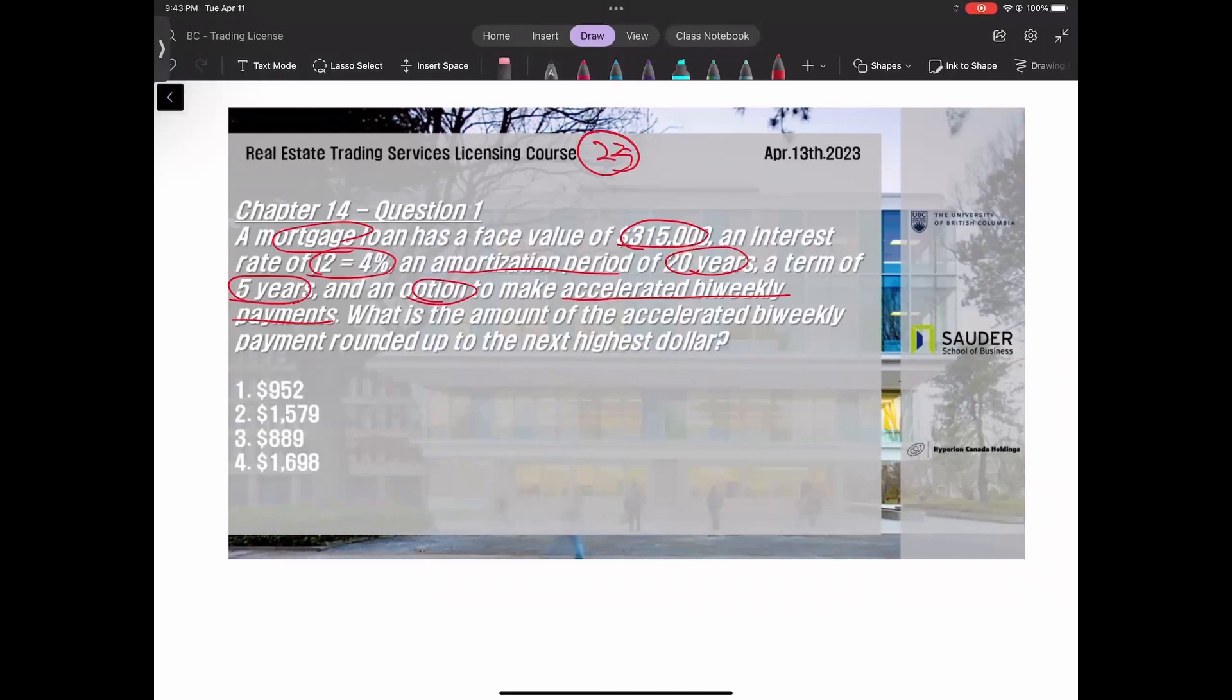The difference from regular biweekly is that we calculate the monthly payment first, then divide by 2 to get the accelerated biweekly payment. To find this amount rounded up to the next highest dollar, we don't need to calculate using the accelerated rate or i weekly. We must calculate the monthly payment first.